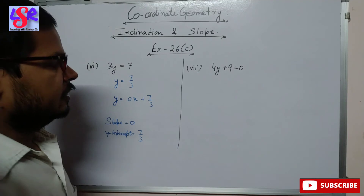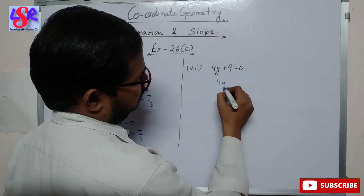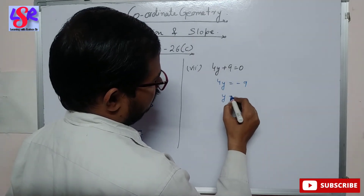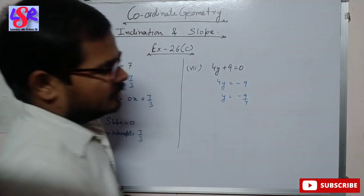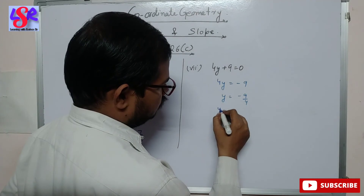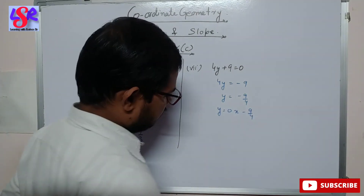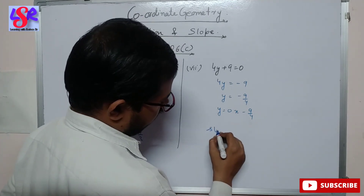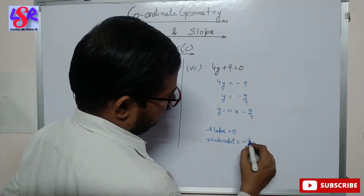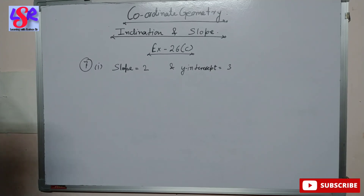Now let's move to the seventh part. Here we are having 4y plus 9 equals 0. This means the slope is 0 and y-intercept is minus 9 upon 4. So this can be written as y equals 0 times x minus 9 upon 4.